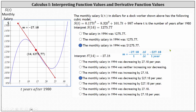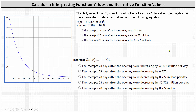Let's take a look at a second example. Here we're given the daily receipts r of t in millions of dollars of a movie t days after opening day, as the exponential model given by r of t, and again r of t is graphed on the left. The vertical axis is r of t, which represents the daily receipts in millions of dollars, and the horizontal axis is t, the number of days after the movie opening.